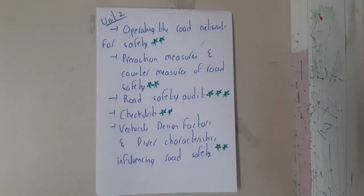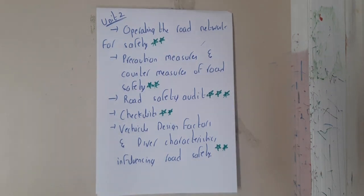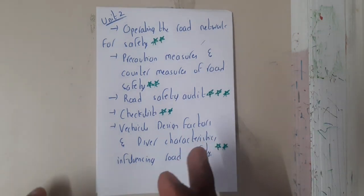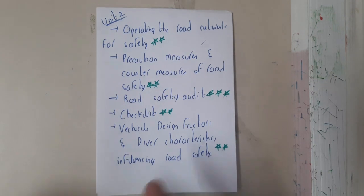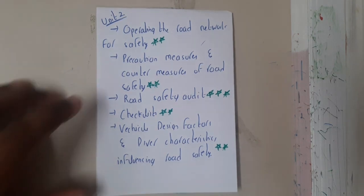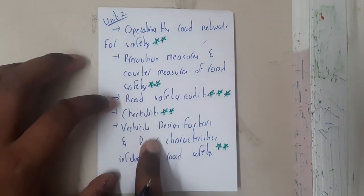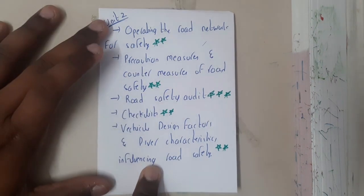Hello guys, welcome back. In this lecture let us go through the review of Unit 2 of Road Safety Engineering. This is one of the easiest units because all the concepts are centered around safety — how you can ensure safety, what precautions to take, what operations to perform, what a road safety audit is, and everything that belongs to that. The unit has been divided in this way.